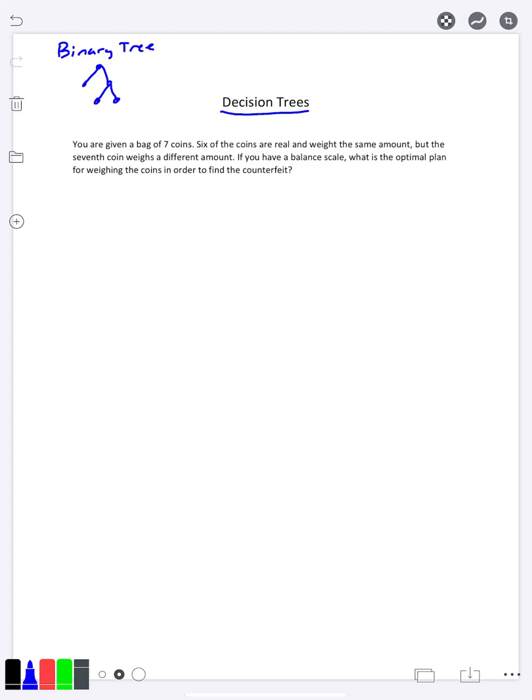In this problem, we are given a bag of seven coins. They all look identical, but one of them is counterfeit and the counterfeit coin will weigh a different amount than the real coins. Maybe heavier, maybe lighter, but it's going to weigh a different amount. We would like to figure out which one it is.